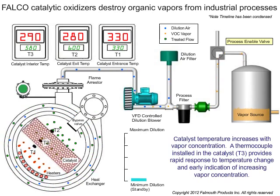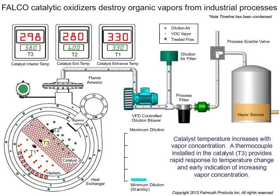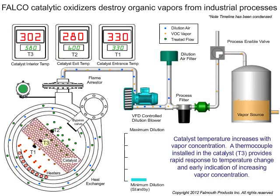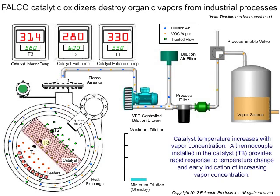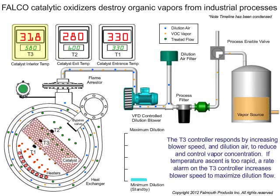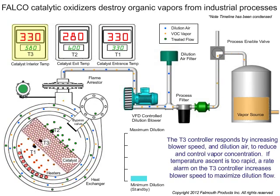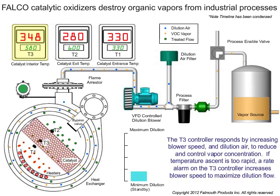A thermocouple installed in the catalyst, T3, provides rapid response to temperature change and early indication of increasing vapor concentrations. The T3 controller responds by increasing blower speed and dilution air to reduce and control vapor concentrations.